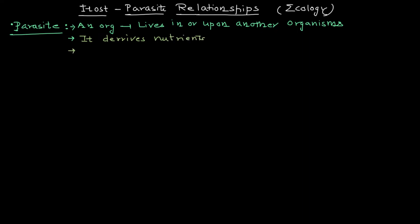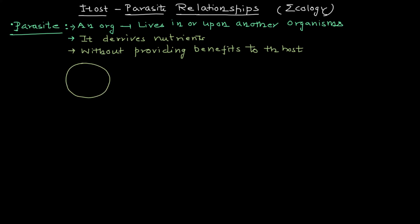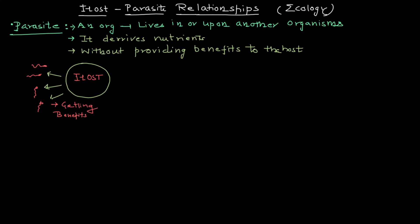Host-parasite relationships are formed most importantly for food or nutrients. The parasite is acquiring nutrients from the host without providing any benefit to the host — this is a one-sided relationship. The host is only providing benefits in one direction; it's not a two-way relationship where one organism provides benefit to the other and receives benefits in return. It is a single-sided relationship where the host is depleting its resources for the parasite.